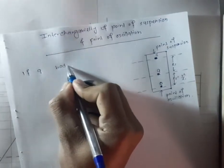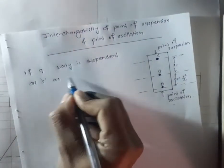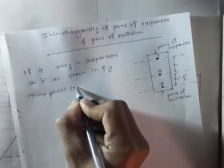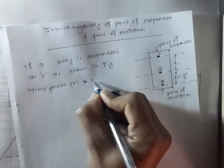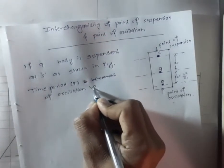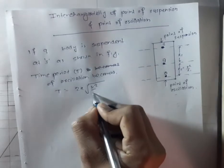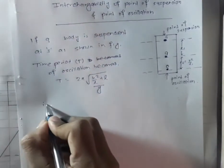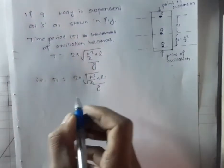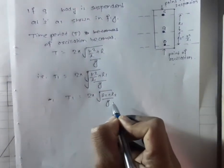Now, if a body is suspended at S, as shown in the figure, the time period T1 is equal to 2π root under (k² / L1 + L1) upon G. Here, k² upon L1 is L2, so T1 is equal to 2π root under (L1 + L2) upon G.